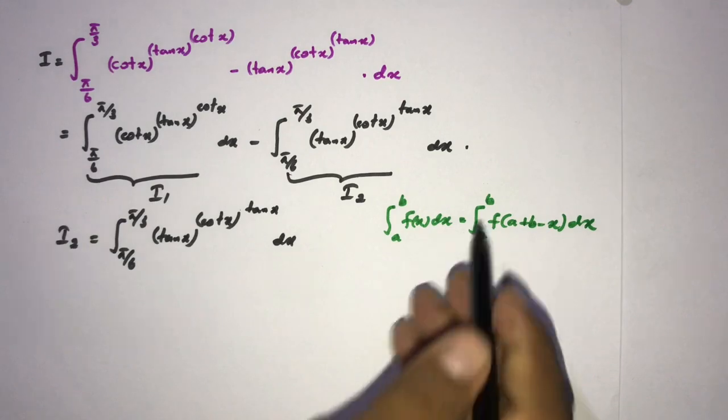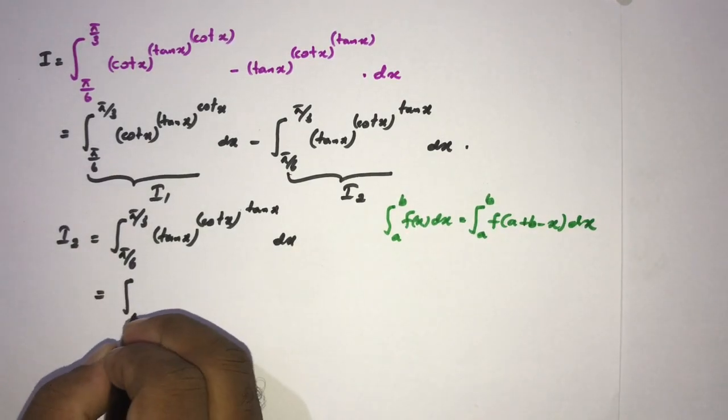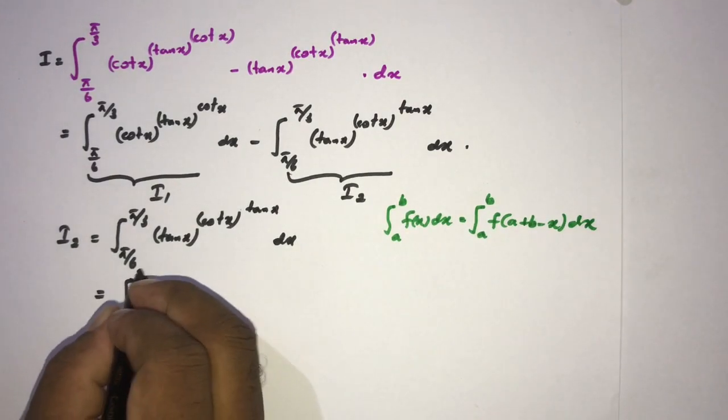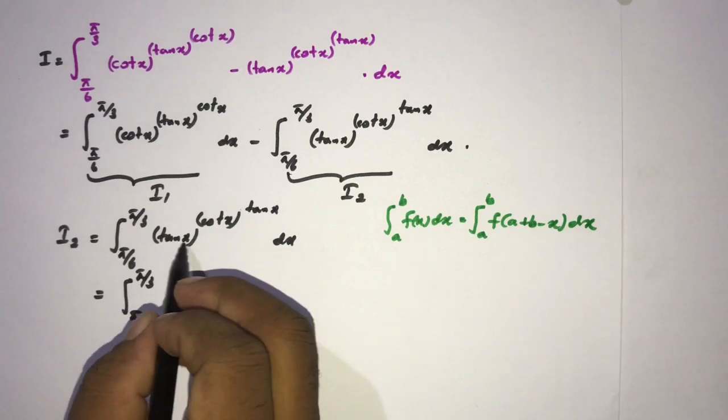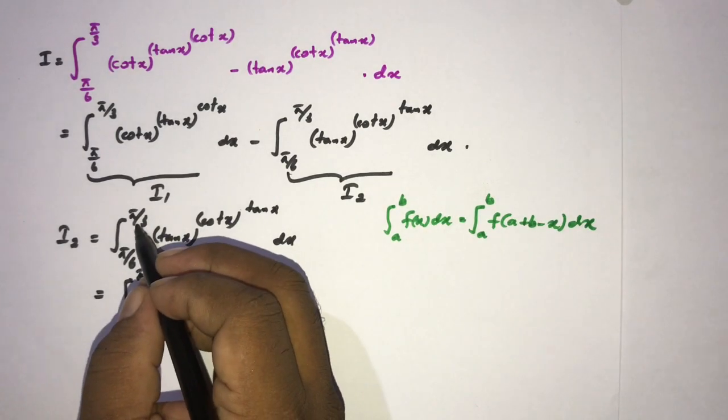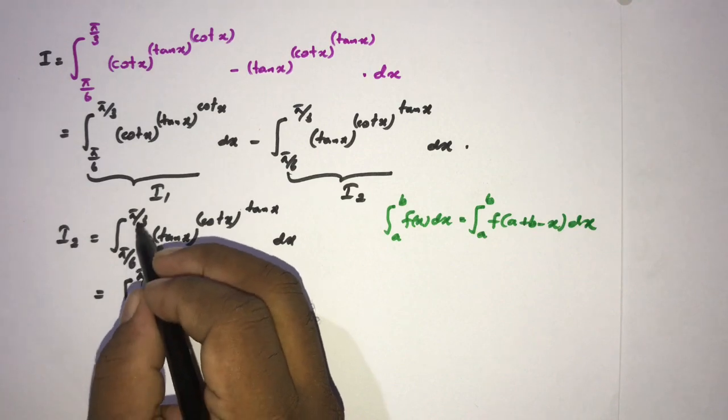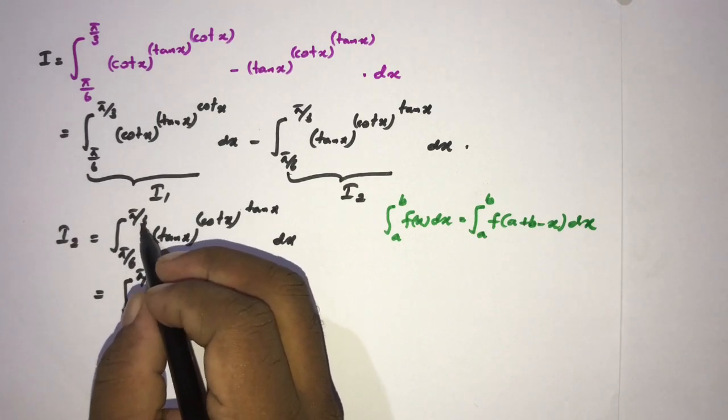So according to this formula we can write our integral is equal to pi over 6 to pi over 3. Now tan of, if we sum this part, so pi over 6 plus pi over 3, we know pi over 2.